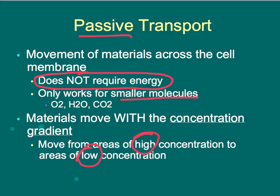There are three basic types of passive transport we're going to talk about: diffusion, which we've already discussed; facilitated diffusion, which is diffusion with some help; and osmosis, which is the diffusion of water.